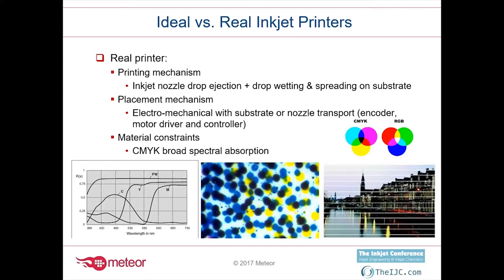People have to build printers in the real world with real components, and those real components don't have ideal behaviors. It also involves electromechanical parts where we move the substrate relative to our printing mechanism. The printing mechanism itself — and I will concentrate purely on inkjet nozzle drop ejection in this talk — not just the drop itself: the drop needs to land on a material and interact with it. There are some splashing effects and spreading effects which have a very strong influence on what the final picture is going to look like.